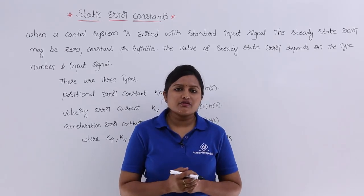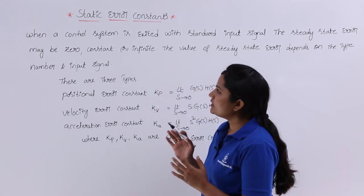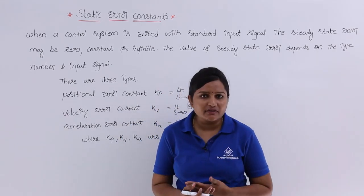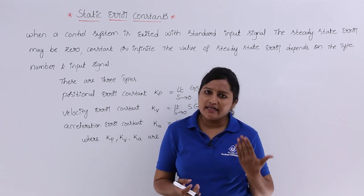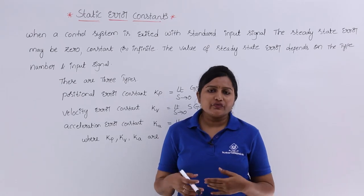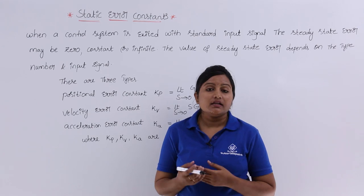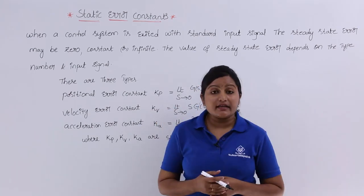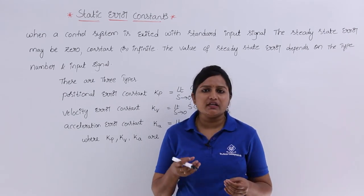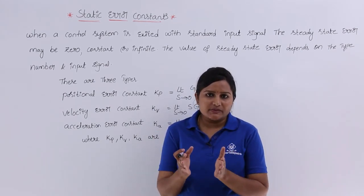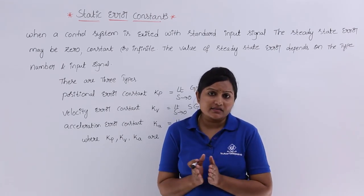In this video we are going to discuss static error constants. When a control system is excited with a standard input signal, the steady state error may be zero or constant or infinite. Steady state error means there is a mismatch between the exact output and input — that difference between input and output we consider as the error signal.